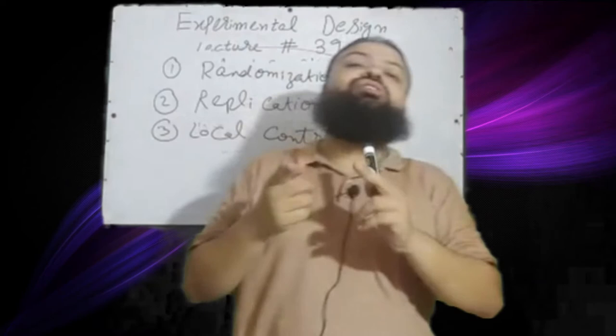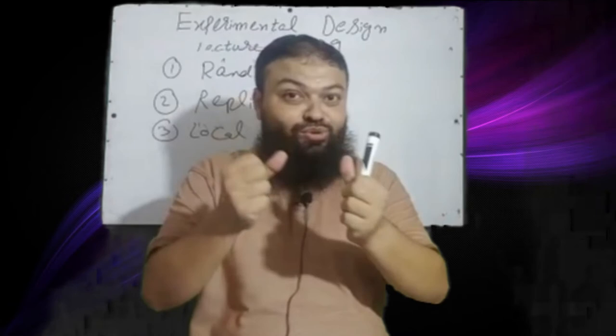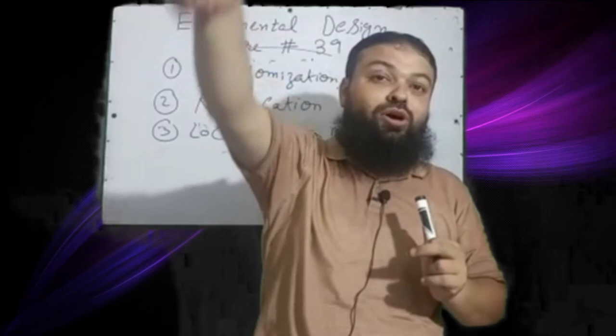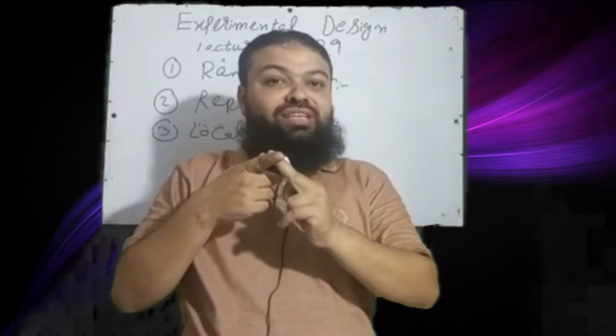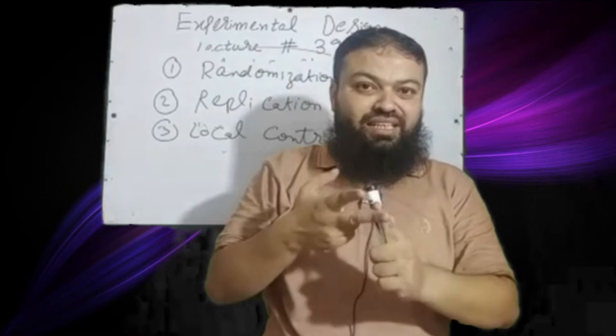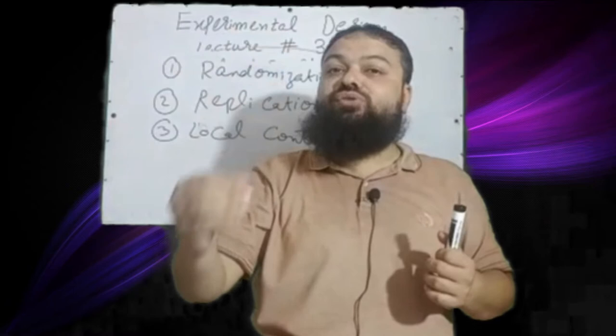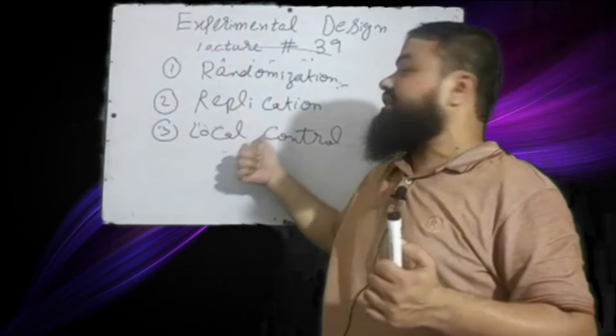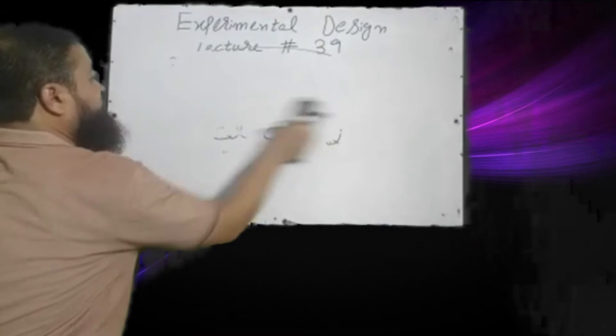We use randomization and replication to control extraneous sources of variation. However, not all extraneous sources — for example, rain on the plot — can be controlled by randomization and replication alone. We use local control to further reduce the experimental error. Now I will discuss CR design.